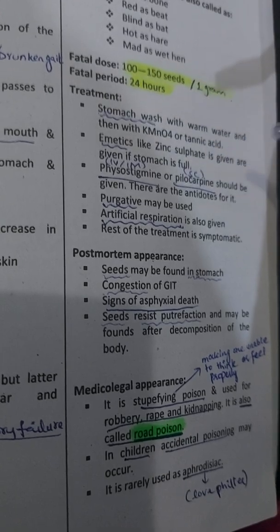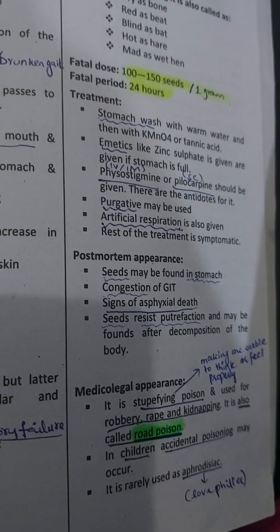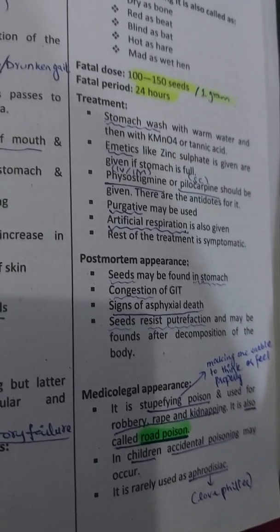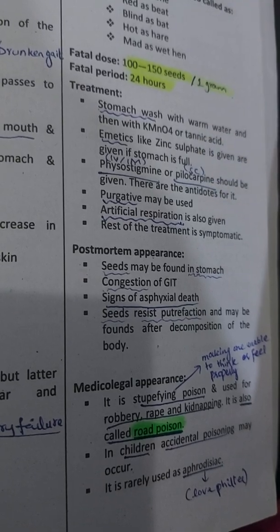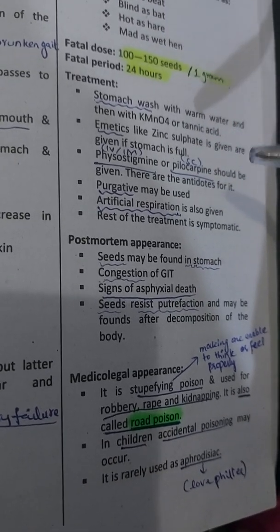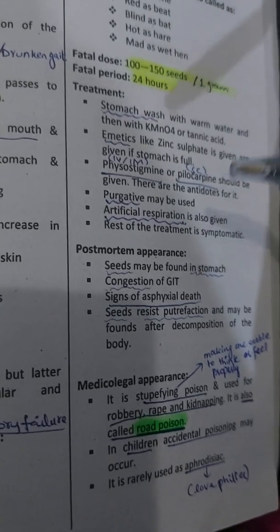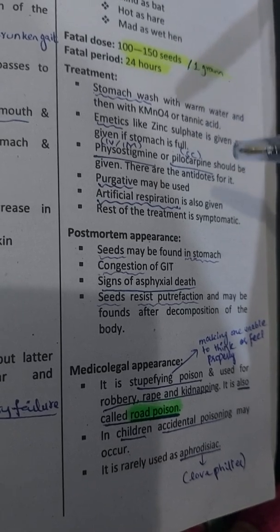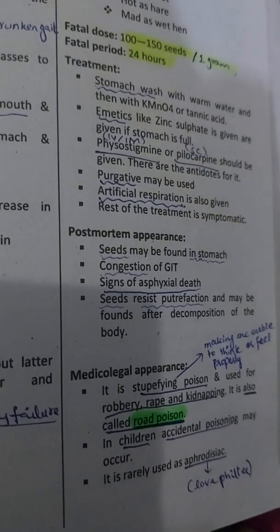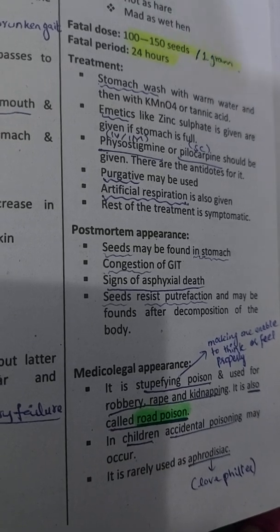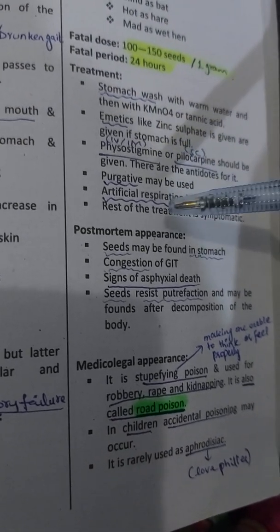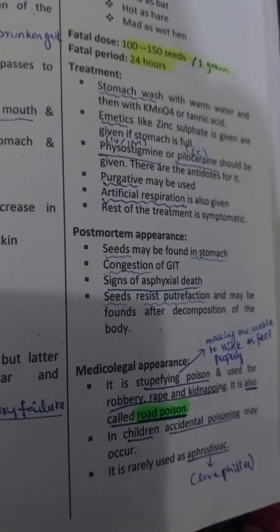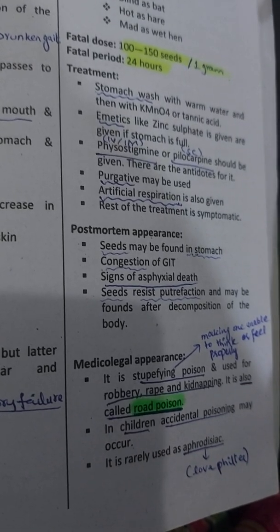As an emetic, zinc sulfate can be used. You can also give physostigmine or pilocarpine as antidotes — these are the most suitable antidotes in Dhatoura poisoning. Physostigmine is given intravenously or intramuscularly, and pilocarpine is given subcutaneously. Purgatives and artificial respiration may also be used. The rest of the treatment is mostly symptomatic.